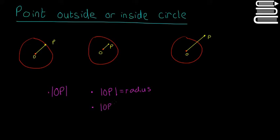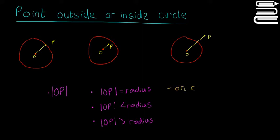If OP is less than the radius, then we're going to have the case where the distance OP isn't as long as the radius, meaning the point is inside the circle. And the final case is if OP is greater than the radius, then the point is going to be outside the circle. So: on circle if equal to, in circle if less than, and outside circle if greater than.